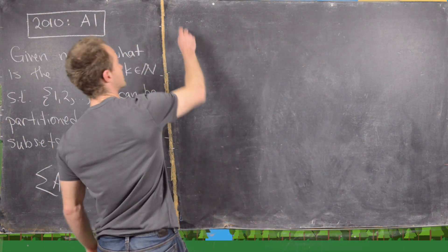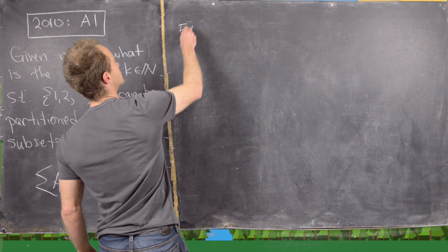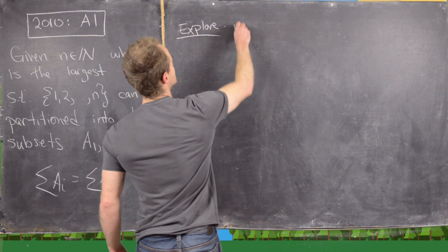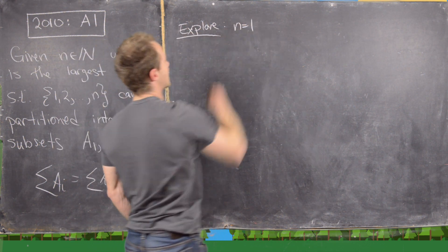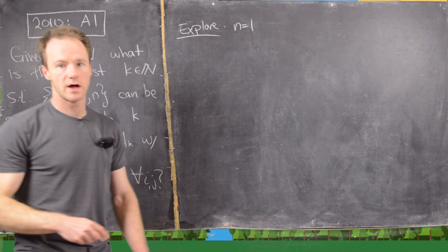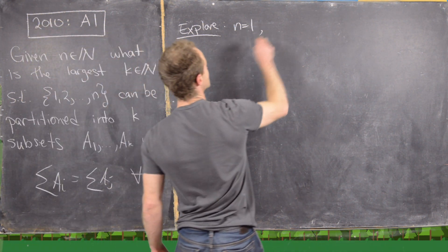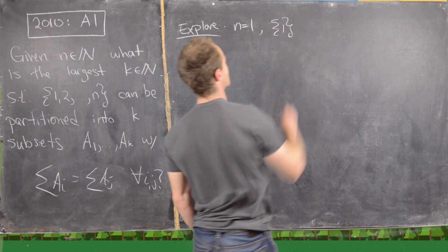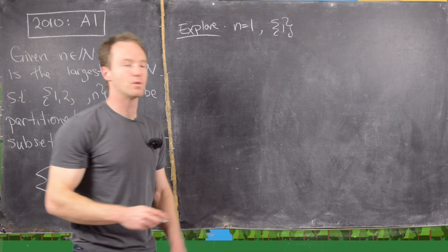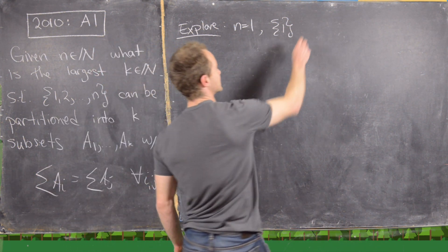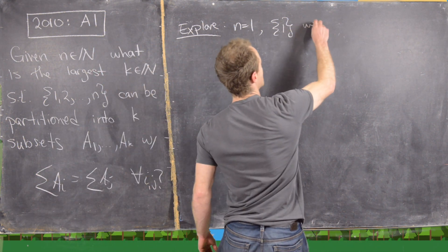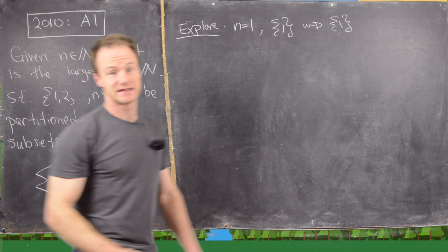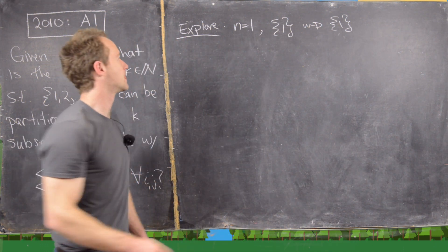Let's do some exploration first. If N equals 1, we're looking for partitions of the set {1}, but there's only one partition of that set, and that is just the set itself.